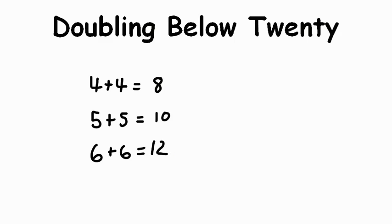So do you notice a pattern there? That's right, we have 8, 10, 12. When you're doubling, you always go up by 2. So we've done 6 plus 6 equals 12. Let's do the next one. 7 plus 7, and remember it's 2 more than 12, so that would be 14. Then 8 plus 8, that equals 16.